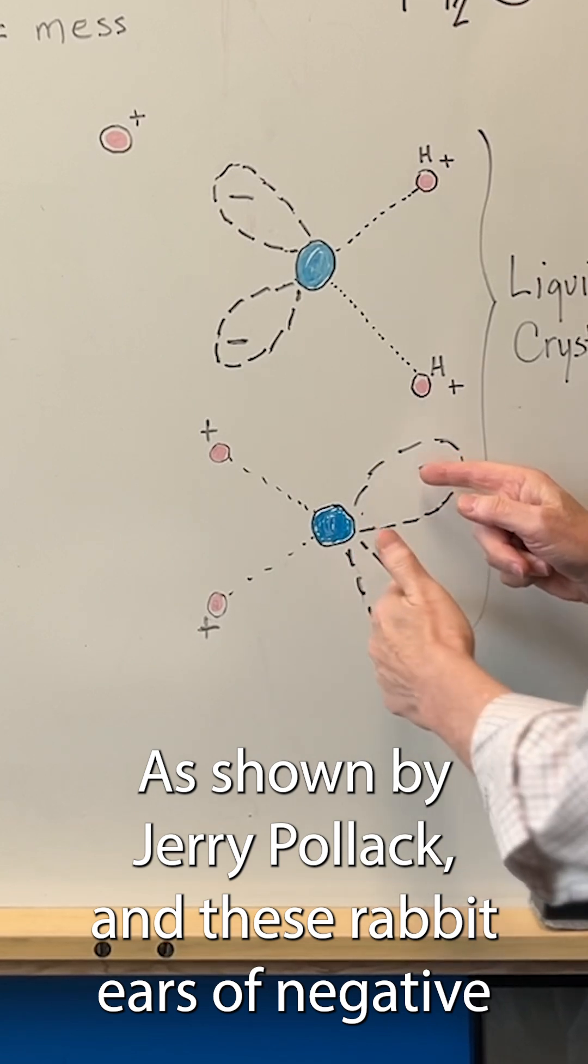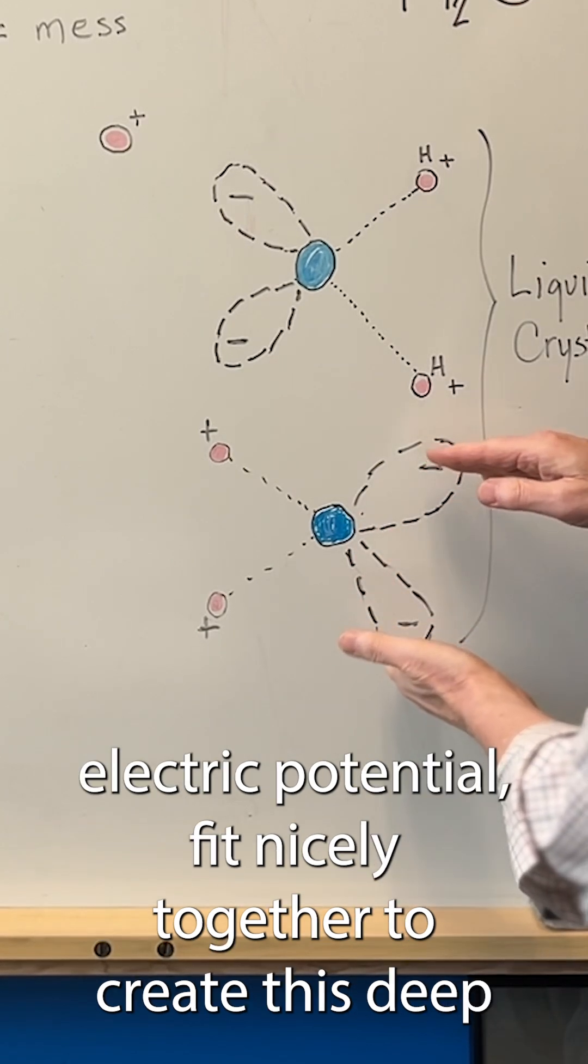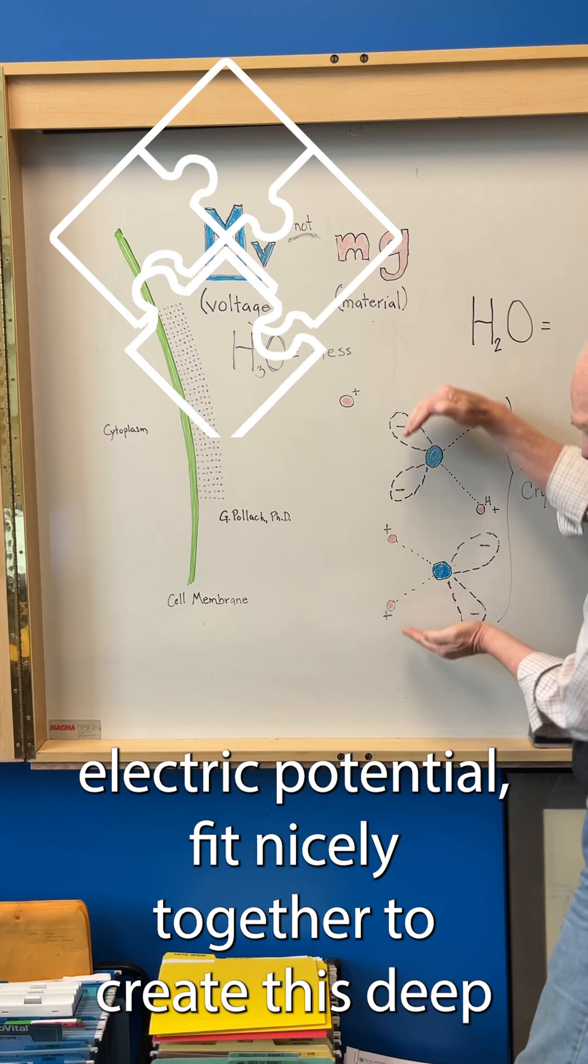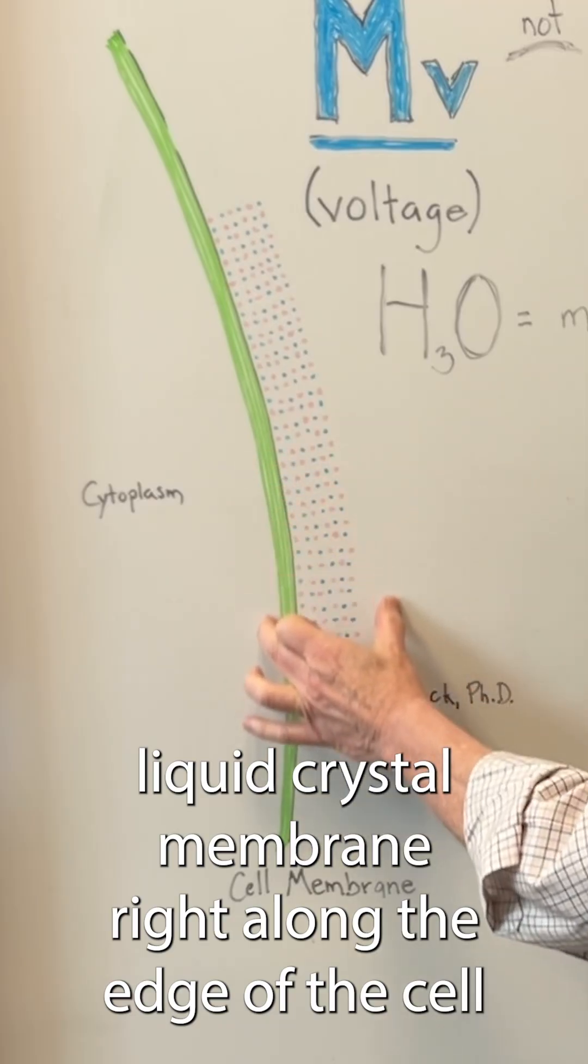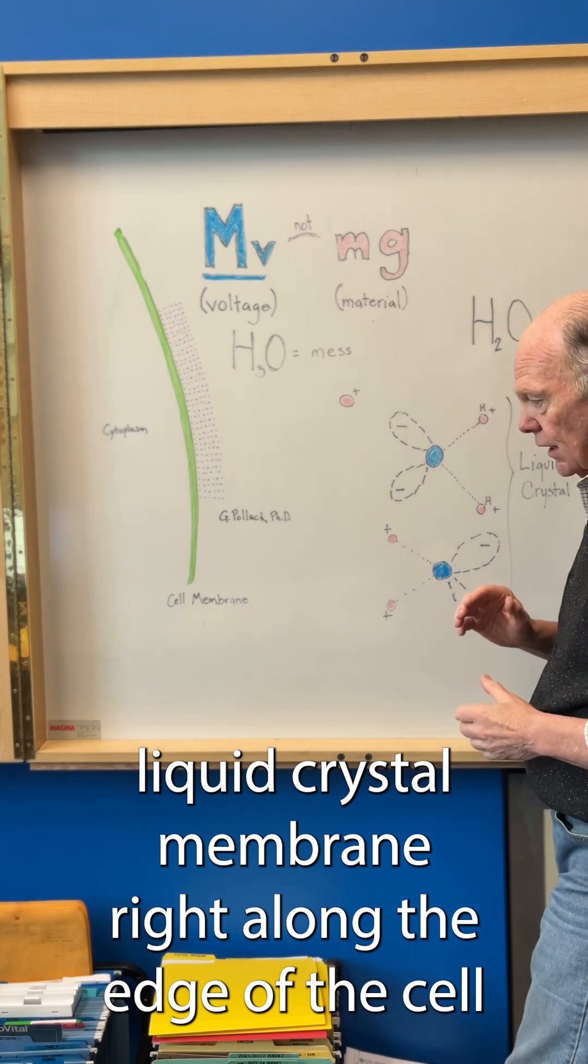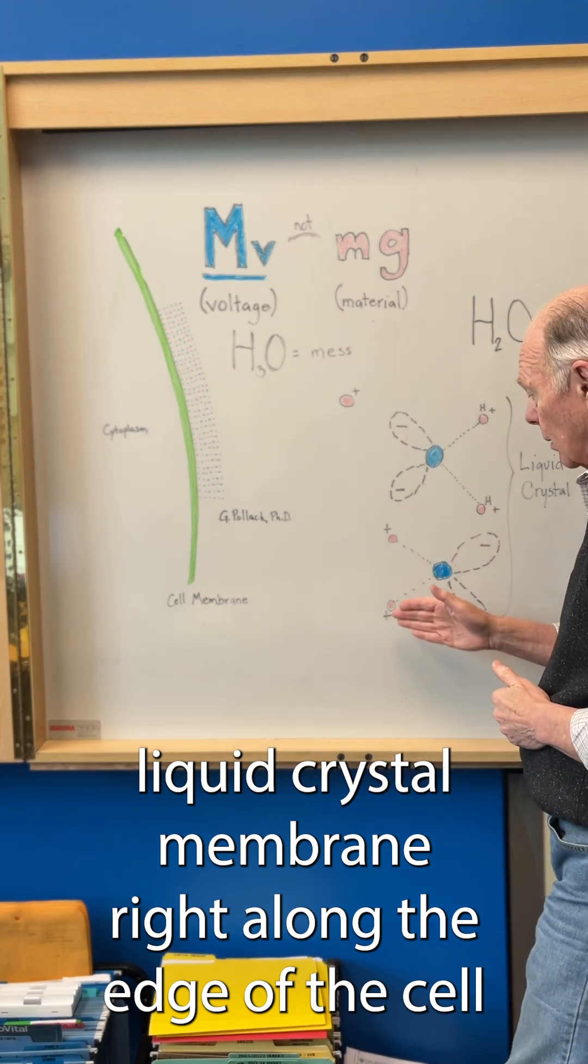These rabbit ears of negative electric potential fit nicely together to create this deep liquid crystal membrane right along the edge of the cell membrane.